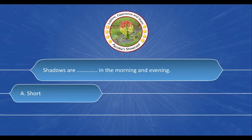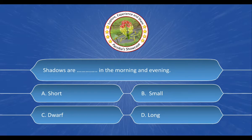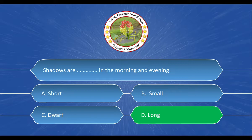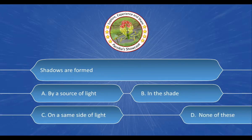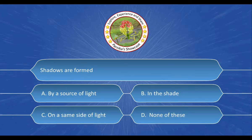Next question: Shadows are ___ in the morning and evening. And the options are: A. Short. And the correct answer is option D. Long.